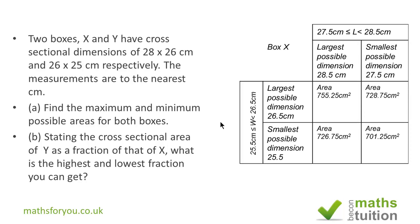We then create a table using the extreme values and find area, since area is length times width. We get four extreme values with a maximum of 755.25 and minimum of 701.25 centimeters squared.